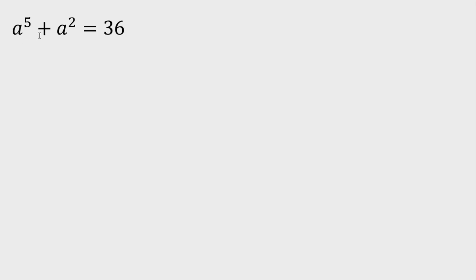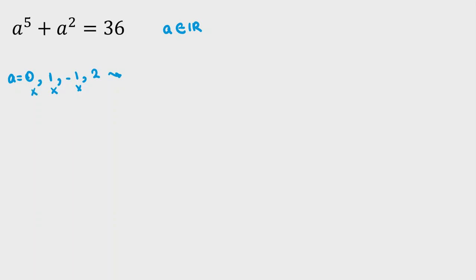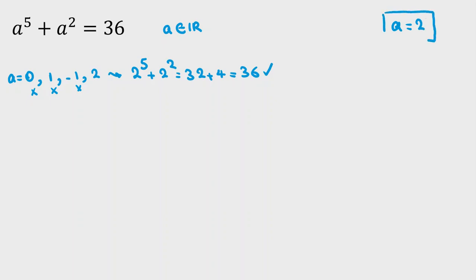We have a to the 5 plus a squared equal to 36, where a is a real number. We want to find all possible values of a. If we try small numbers like 0, 1, -1, and 2: 0 gives 0, 1 gives 2, -1 gives 0, but 2 gives 2 to the 5 plus 2 squared which is 32 plus 4 equals 36. So a = 2 is one answer.